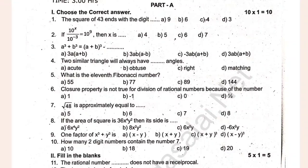The square of 43 ends with a digit. A cube plus 3, b cube is equal to a plus b cube. Two similar triangles will always have dash angles.